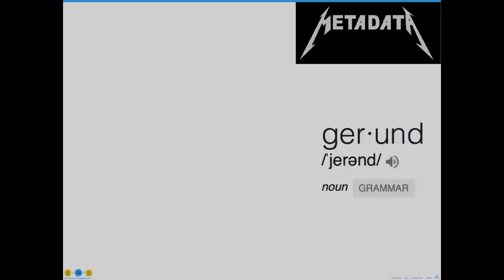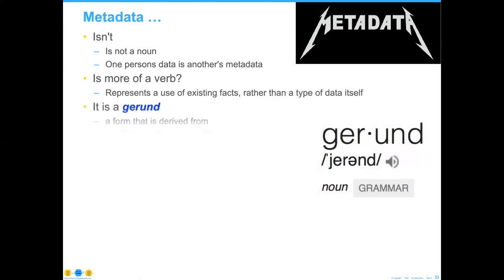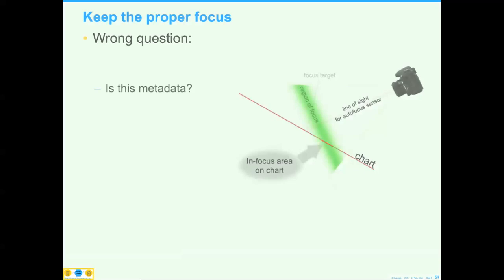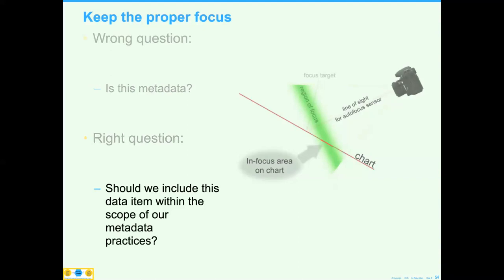Let me talk about the parts of speech. One person's data can be another's metadata. The gerund is a verb that functions as a noun — it describes the use of the data, not a data type. That's important because it changes your value proposition around metadata. The answer to 'is this metadata?' is that anything can be metadata. The real question is: should we include this data item within the scope of our metadata practices? That's a value proposition allowing you to determine whether it's worthwhile to store and maintain this information.